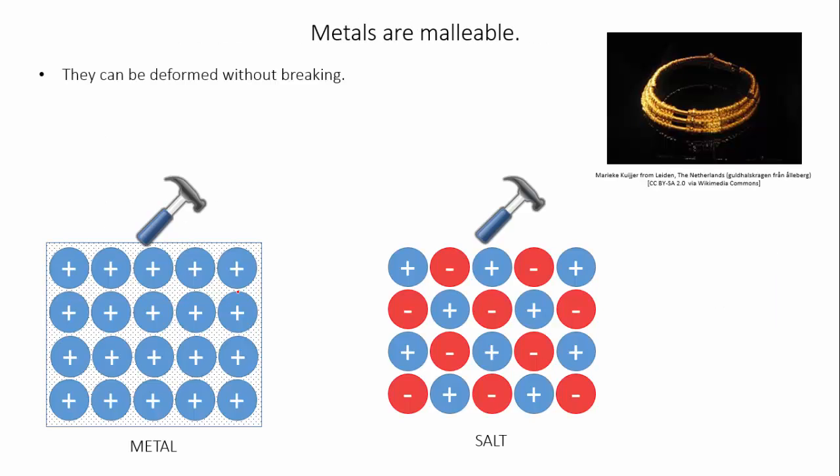Let's look at malleability first. Malleability means that a substance can be beaten into shape or it can be deformed without breaking. This property was what allowed the ancient Vikings, Romans and other civilizations to make gold jewelry and bronze and iron weapons and tools with very simple methods.